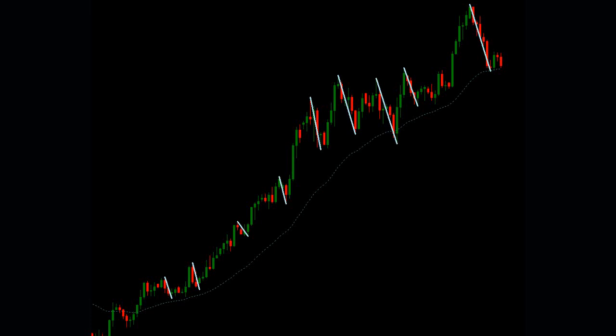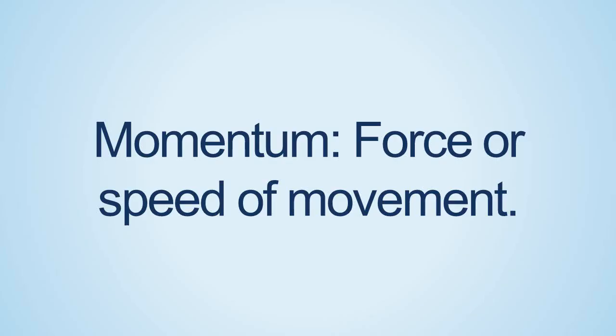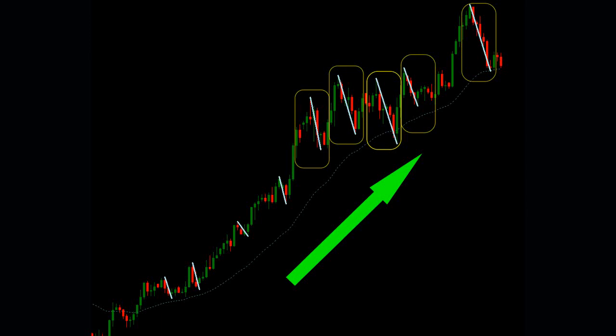So what were they missing? Momentum. Momentum is a noun meaning force or speed of movement, and during a move opposite the longer-term trend, the speed of the movement to the longer-term upside is weak. Many times the trend and momentum are on the same side, but other times they diverge like we see in this chart — trend is up but momentum is down.